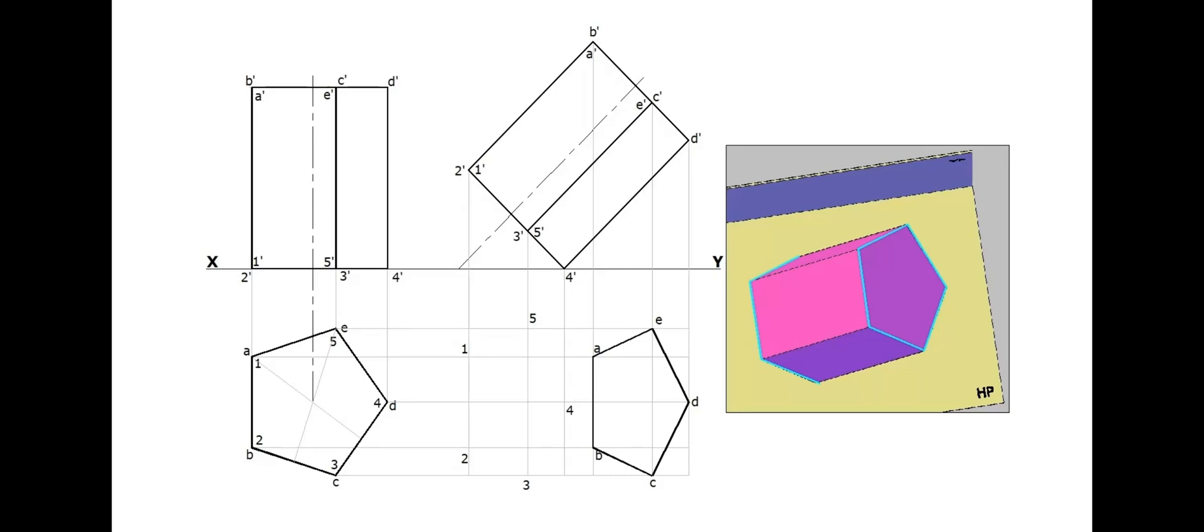For the other bottom base, only outer edges are visible. Edges 1-2, 2-3 and 5-1 are visible dark edges. The other two base edges 3-4 and 4-5 are invisible.